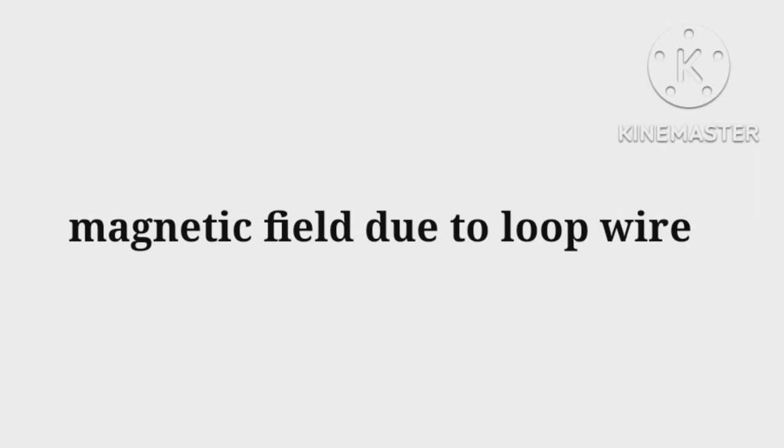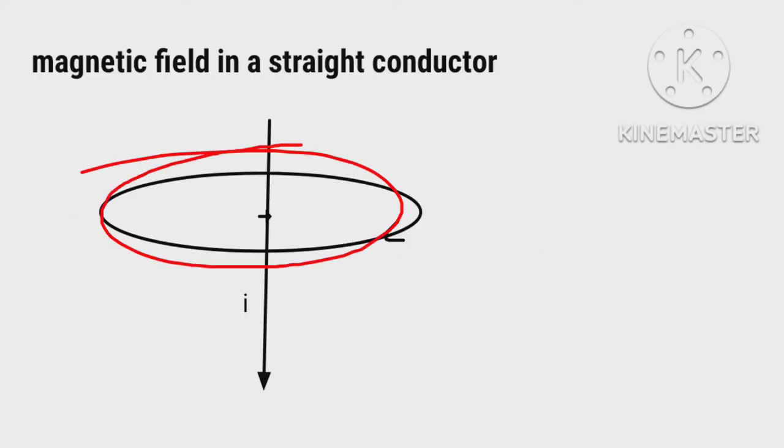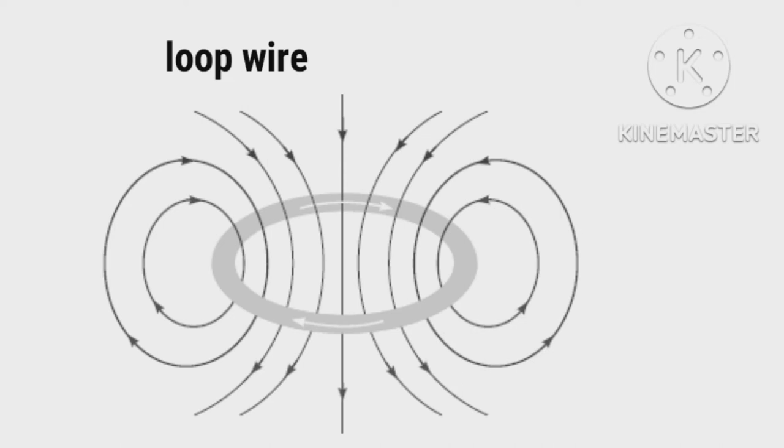In our last video, we explained how a current-carrying conductor can produce a magnetic field. Let us mold this wire into a loop. Now we shall try to know how a current-carrying loop produces a magnetic field. Here we have a loop wire. We allow current i to pass through it in this direction.